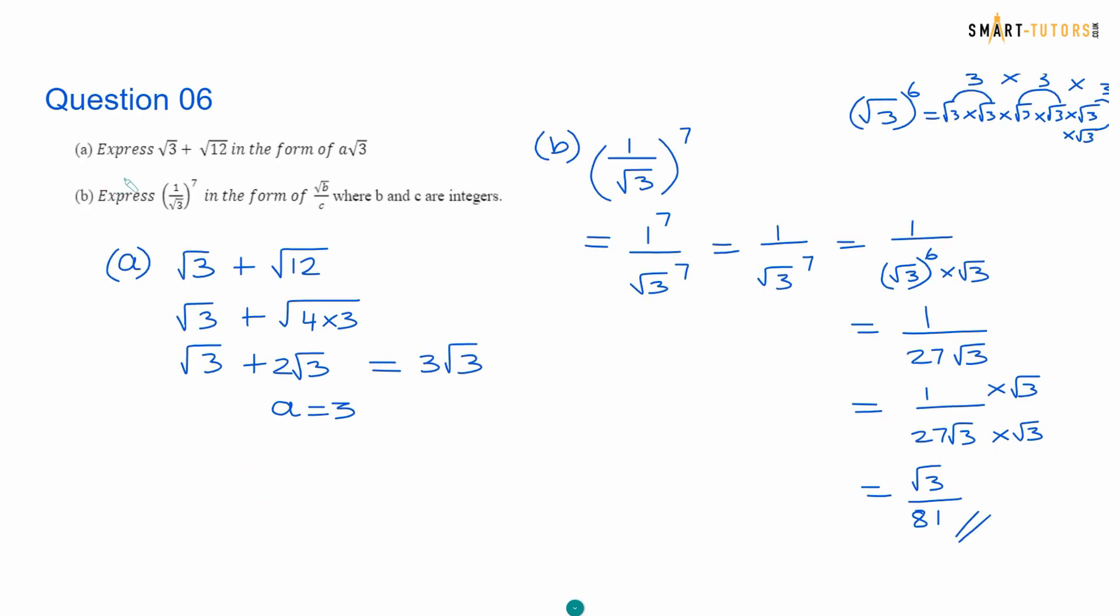Question number 6. Express square root of 3 plus square root of 12 in the form of a root 3. Square root of 12 can be written as 4 times 3. Square root of 4 times 3, square root of 4 can be written as 2 root 3. So 2 root 3 plus root 3 is going to be 3 root 3. So a equals 3.